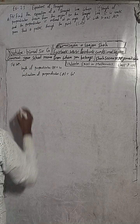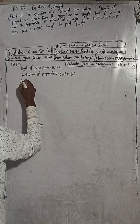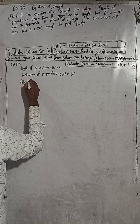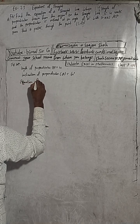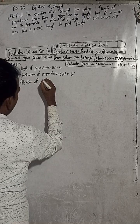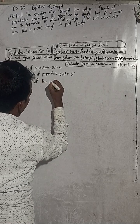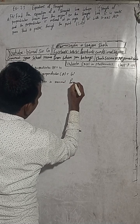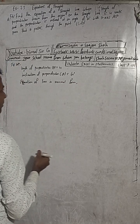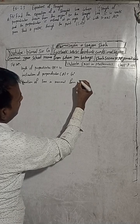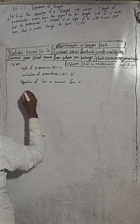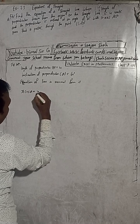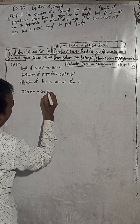Now equation of line in normal form. The equation of line in normal form is: x cos α + y sin α = P.